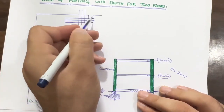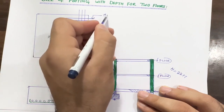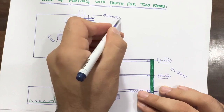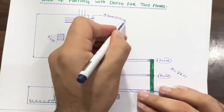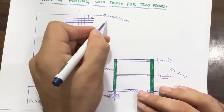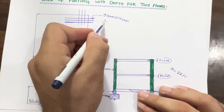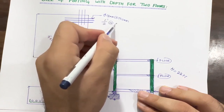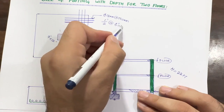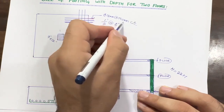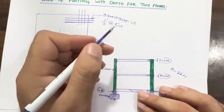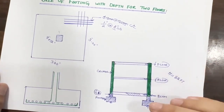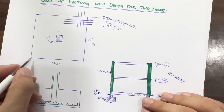For the main bars and distribution bars, you can use a diameter of 12 millimeters with spacing of 150 mm center to center — or equivalently, half-inch (1/2") diameter steel rods with spacing of six inches center to center. These are the same dimensions expressed in millimeters and inches respectively. These are the steel reinforcement details.